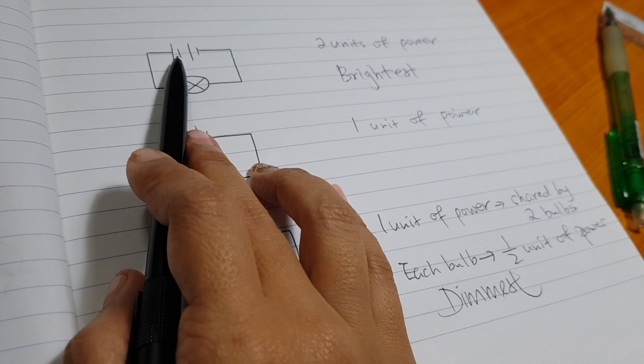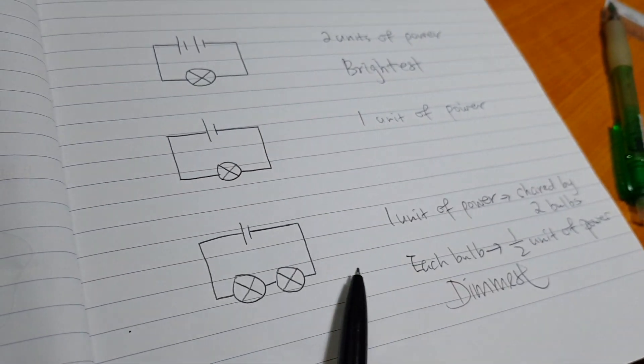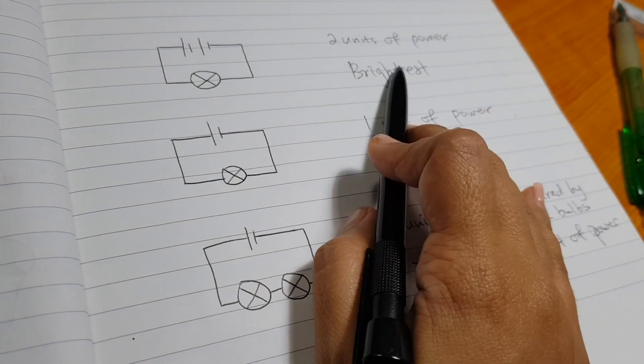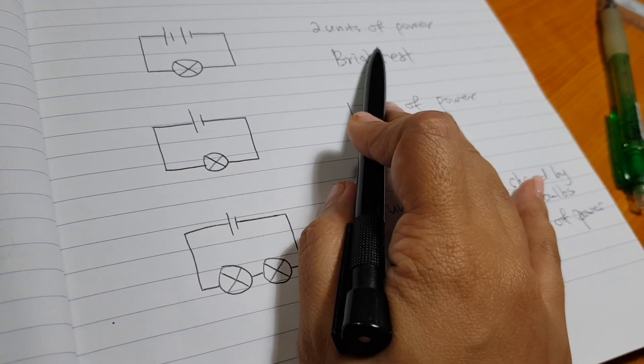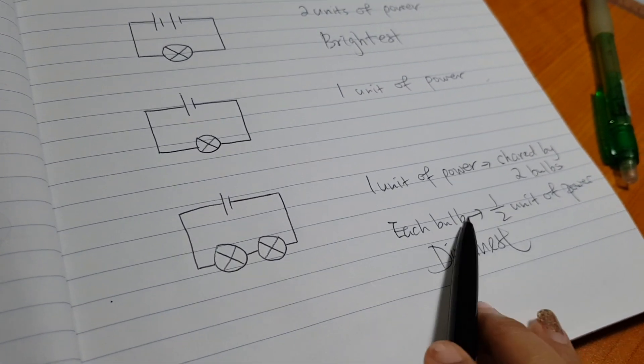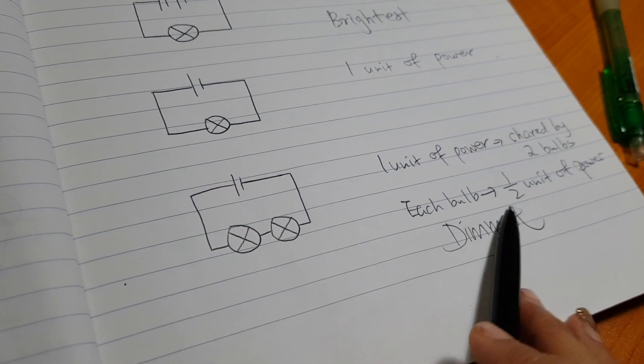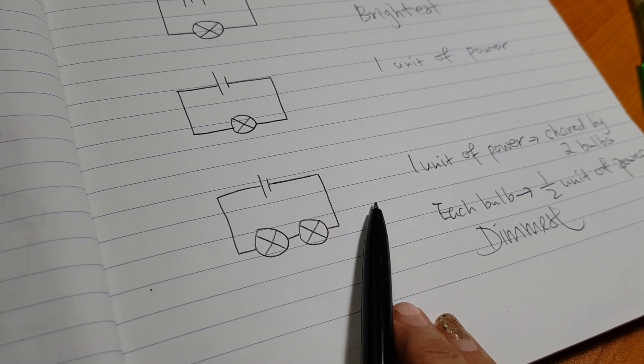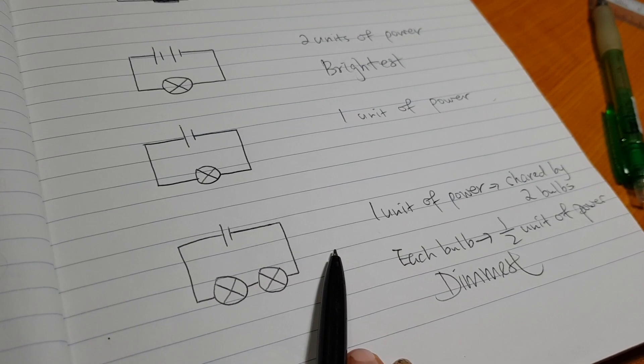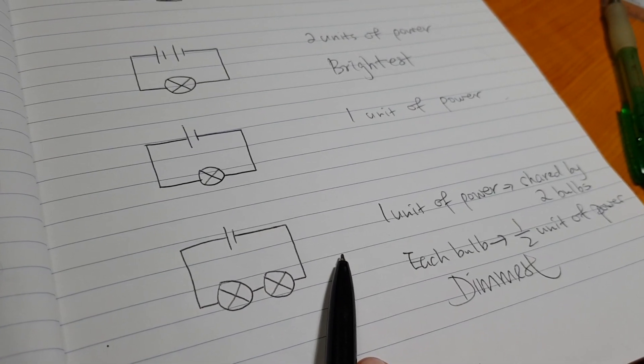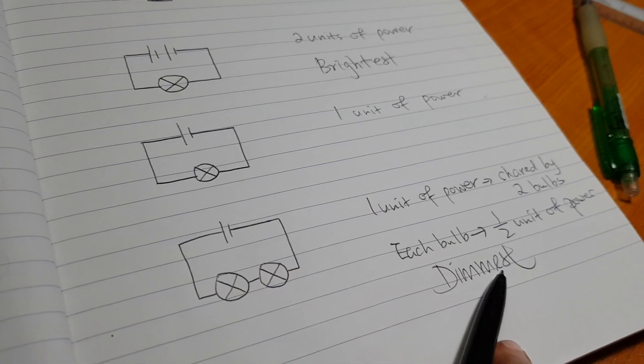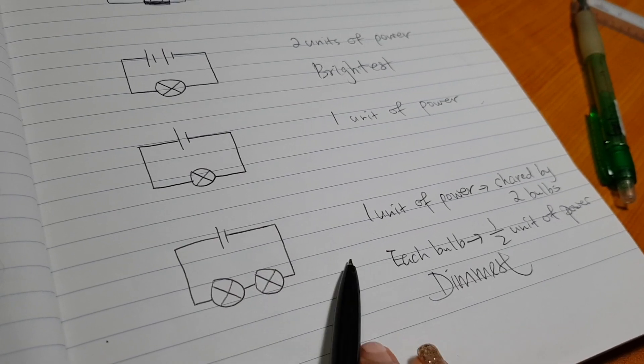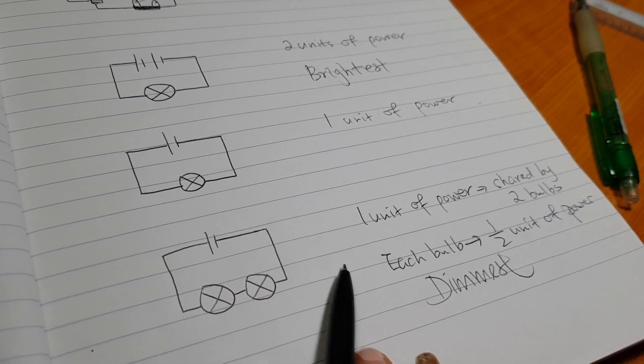So next time you must remember you must check the number of batteries and check the number of light bulbs. More batteries, brighter. More units of power, brighter. More light bulbs means they share. If I have four light bulbs means each one have only one quarter unit. Very little right? So will it be brighter or dimmer? Dimmer. Dimmer. So the more bulbs, the dimmer it is. Each of the bulbs. Good.